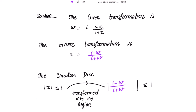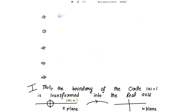Since |z|² = z·z̄, we square both sides. Writing (i - w)/(i + w) multiplied by its conjugate, the conjugate of (i - w)/(i + w) is (-i - w̄)/(-i + w̄), giving |(i - w)/(i + w)|² ≤ 1. We then multiply out the numerators and denominators.